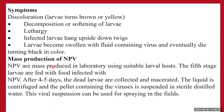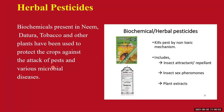NPV can be mass-produced in the laboratory using a suitable larval host. Fifth-stage larvae are fed food infected with NPV; after four to five days the larvae die. The dead larvae are collected, macerated, the liquid is centrifuged, and the pellet containing the virus is suspended in sterile distilled water. This suspension is then sprayed in the field as a viral pesticide.